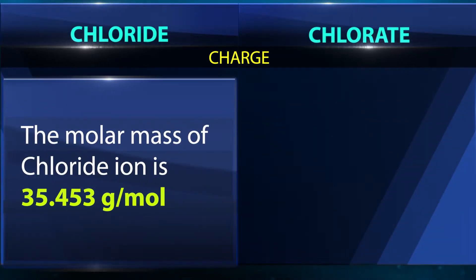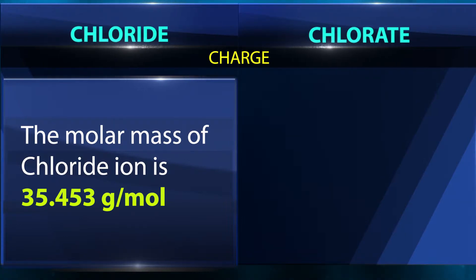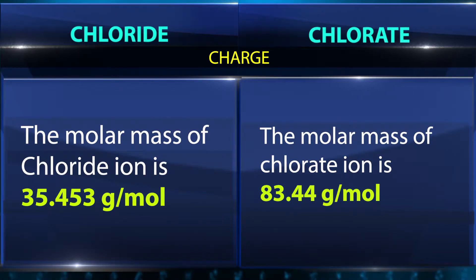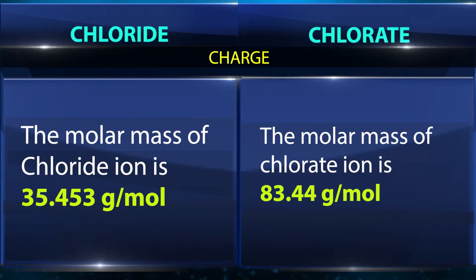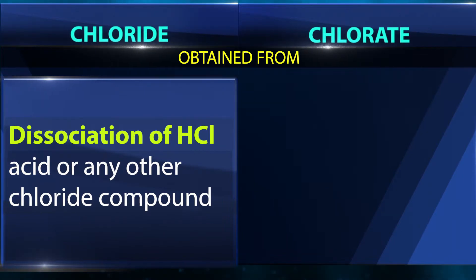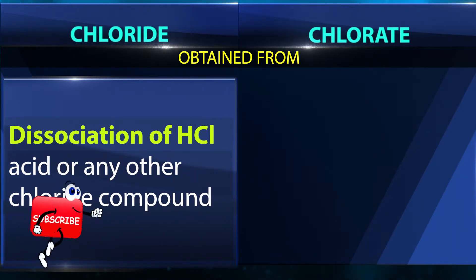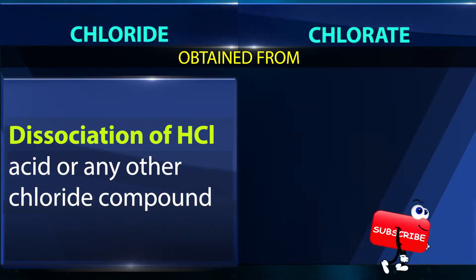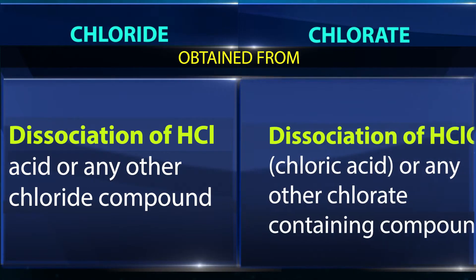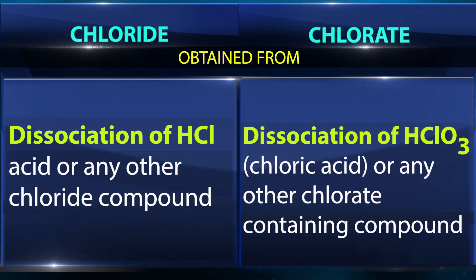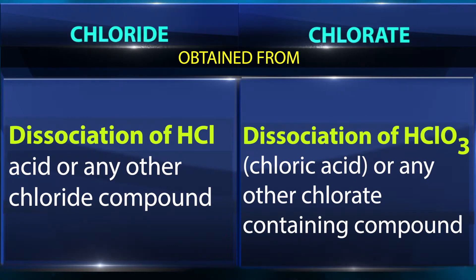The molar mass of the chloride ion is 35.453 g/mol, while the molar mass of the chlorate ion is 83.44 g/mol. Chloride is obtained from the dissociation of HCl or any other chloride compound, whereas chlorate is obtained from the dissociation of HClO₃ (chloric acid) or any other chlorate-containing compound.